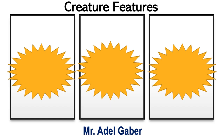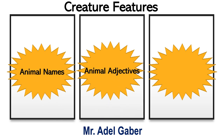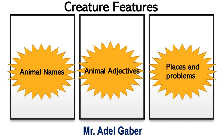Write these headings in your exercise book: animal names, animal adjectives, places and problems.